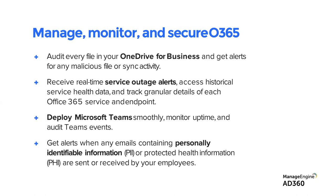If you're breached and an attacker demands a ransom for PII, consider the 3-2-1 backup rule: make three copies of any machine-critical data, have two stored in different storage media, and have one stored in a different geographical location. This works like magic almost every time. Look for easy ways to double up your security.